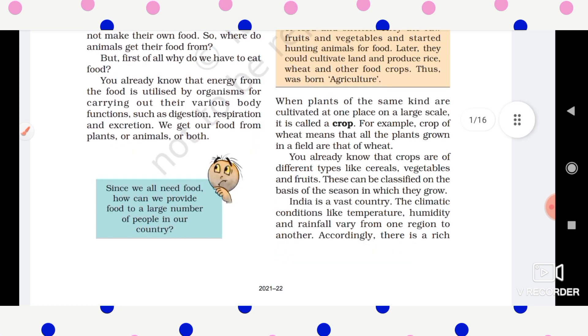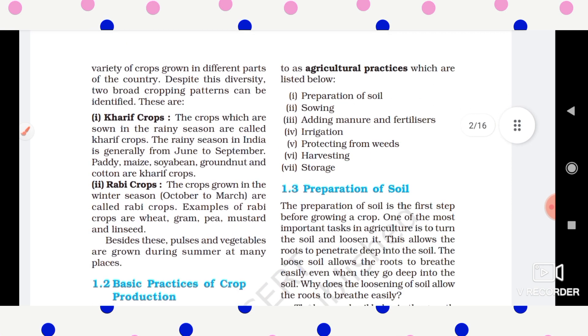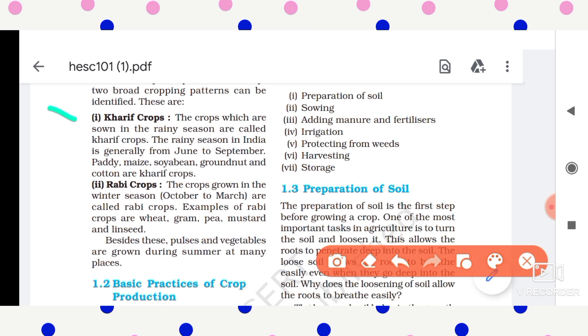So let us look at the different types of crops. The first type of crop is kharif crop, and the next is rabi crops. The kharif crops are the crops which are sown in the rainy season. Kharif crops are sown in the rainy season, and the rainy season in India is from June to September.